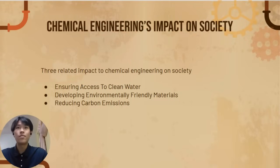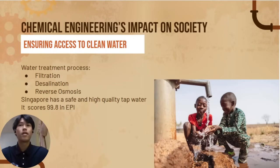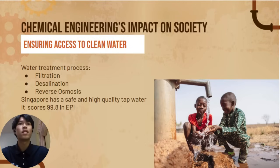My presentation title is about chemical engineering's impact on society. There are three related impacts: the first is ensuring access to clean water, the second is developing environmentally friendly materials, and the third is reducing carbon emissions. Chemical engineers play a vital role in addressing these challenges by developing advanced water treatment processes such as filtration, desalination, and reverse osmosis, which remove harmful contaminants to ensure safe drinking water. Innovation in wastewater treatment and recycling systems also helps conserve water resources, making them more sustainable.